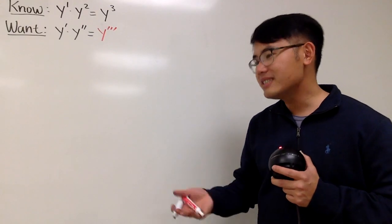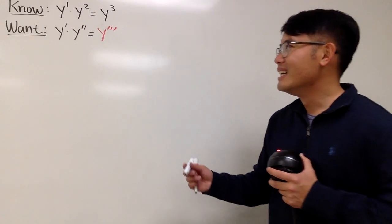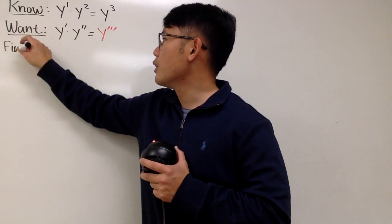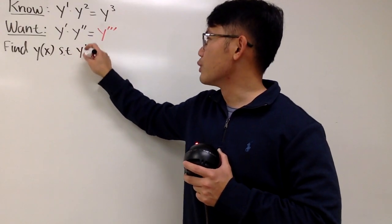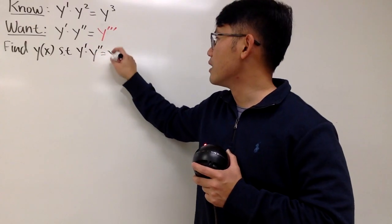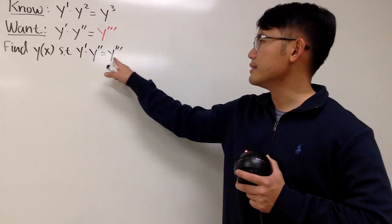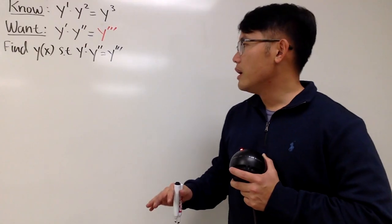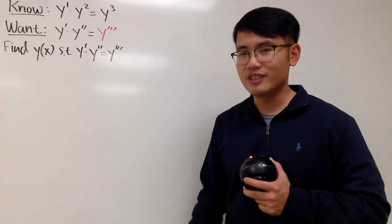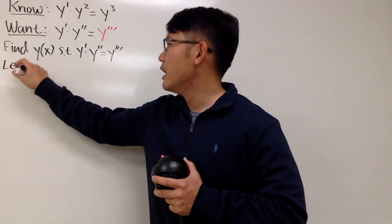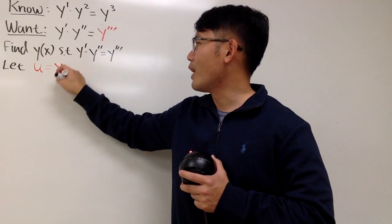So check this out. The goal is to find y, where y is a function of x, and we want the first derivative times the second derivative to equal the third derivative. I will take a substitution, because we have a third-order nonlinear differential equation. I will let u be my first derivative of y, so u equals y prime. Well, this right here will be u times y double prime, and differentiating gives u prime. That's the setup.